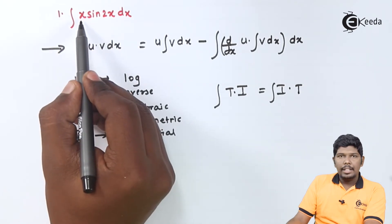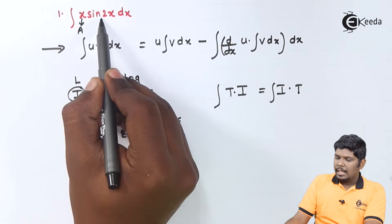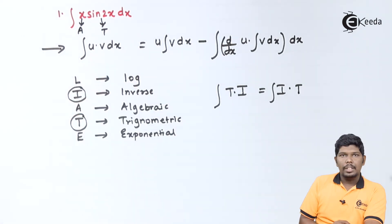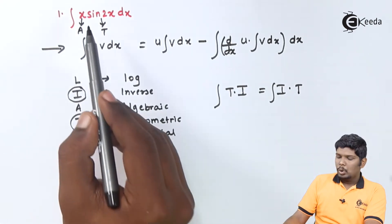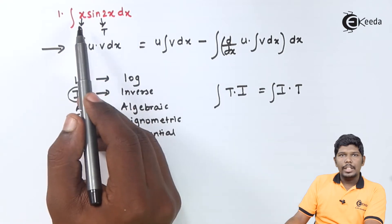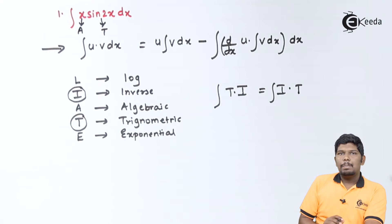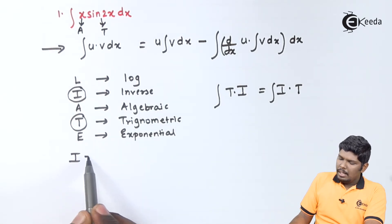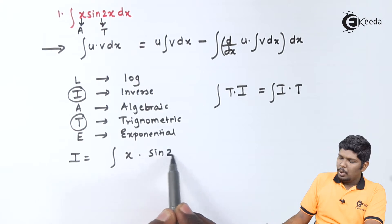Here x is our algebraic function, as it does not contain any sine, cos, tan, nor is it exponential or logarithmic. And sin2x is a trigonometric function. Therefore, A comes first and then T — so the given order is correct. If it were written as sin2x into x, we would rewrite it as x into sin2x. So I is equal to integral x into sin2x dx.